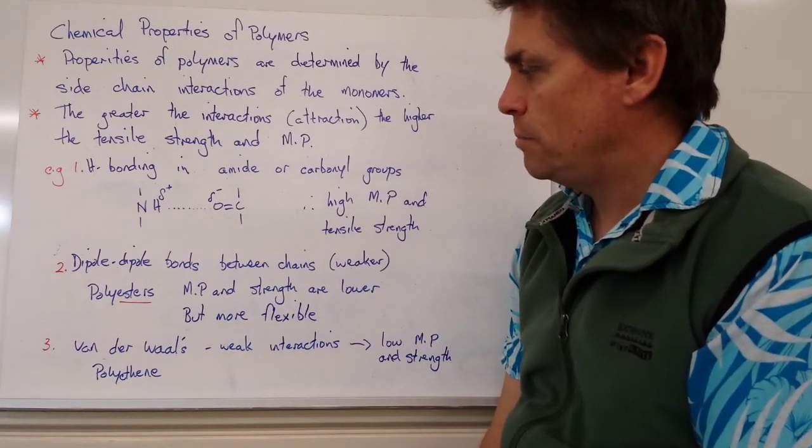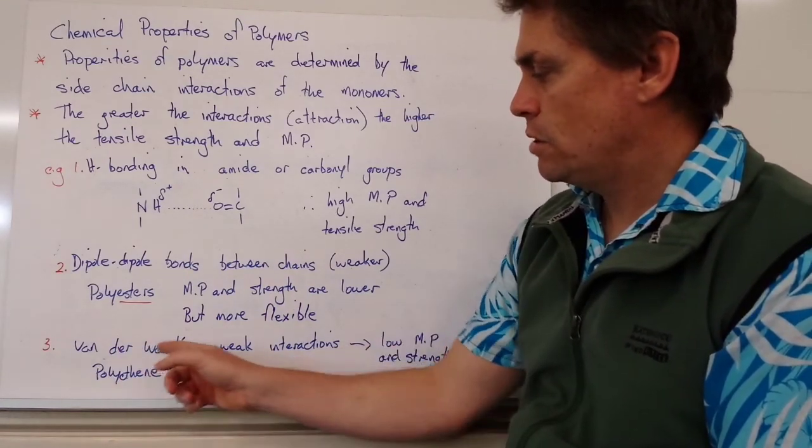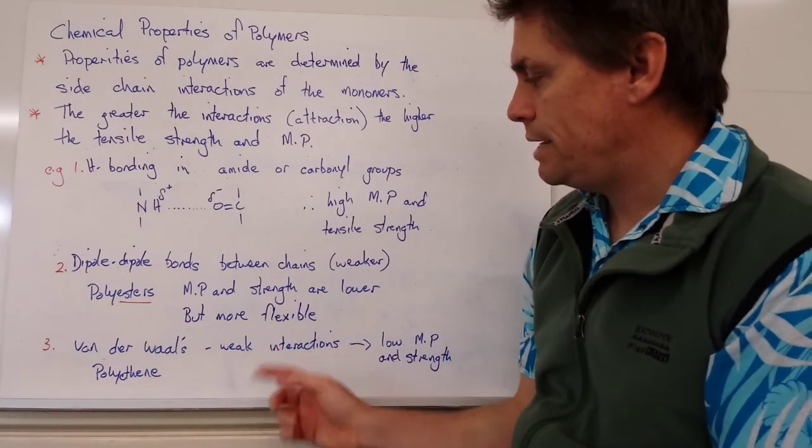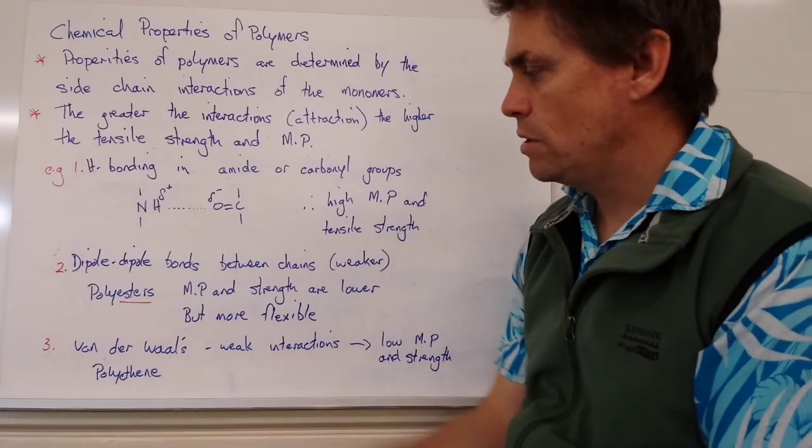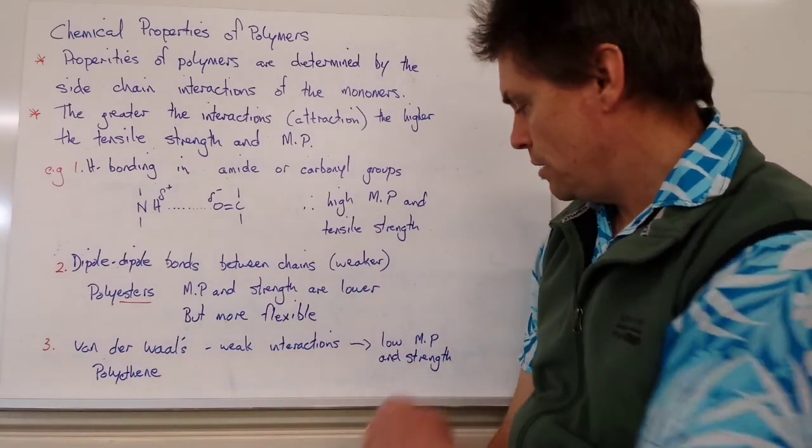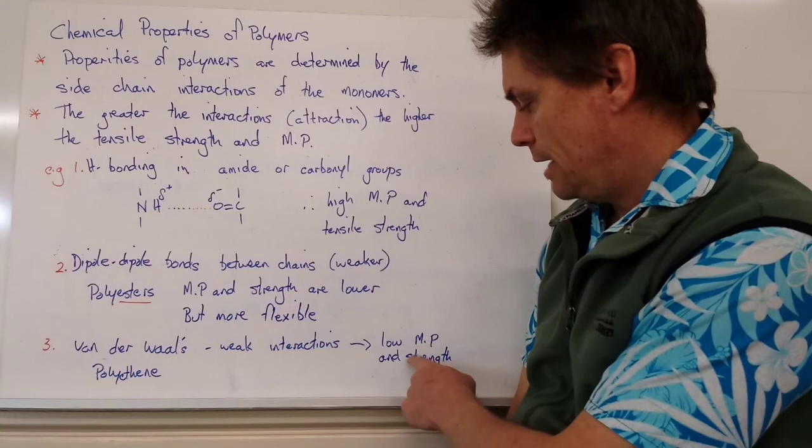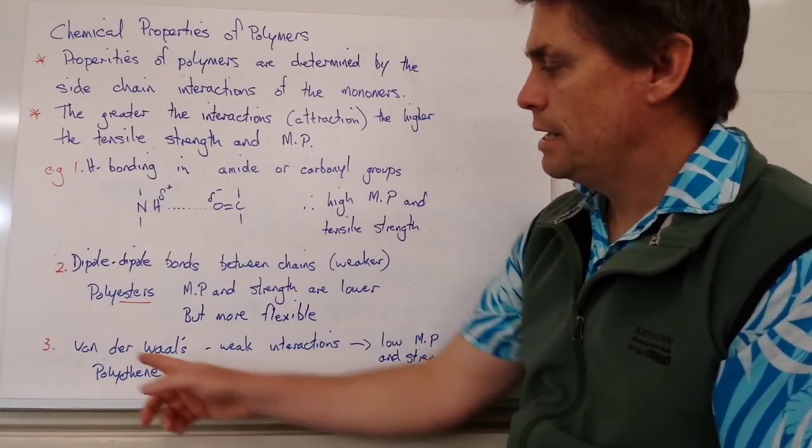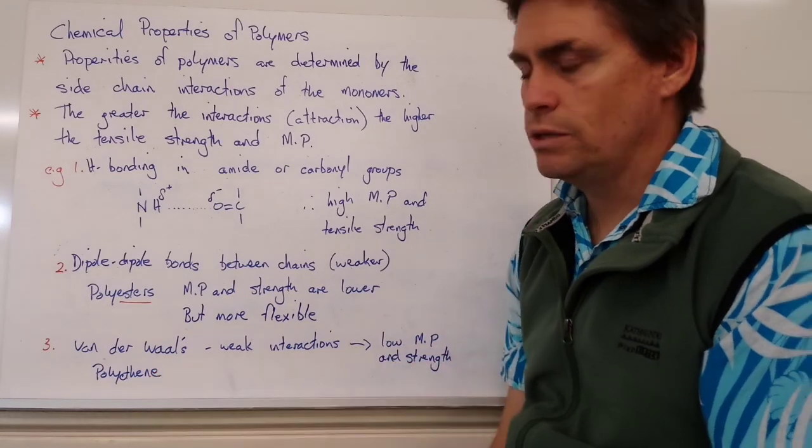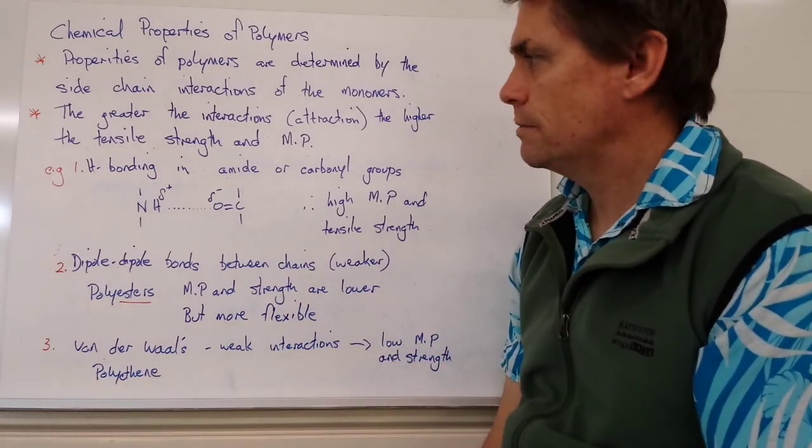We've got a third type of bond as well, which is van der Waals forces - very weak interactions. The molecules that contain only van der Waals forces between the polymer chains will have low melting points and low strength. An example of this type of bonding is polyethene, which we looked at on the first page.